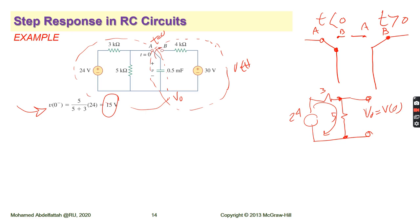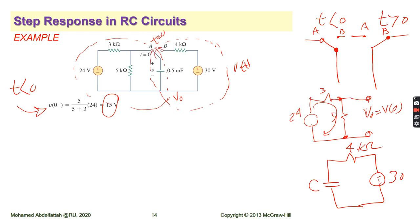Once you find the initial condition, move to the next switch position. After time zero, when the switch moves to the right circuit, we have a resistor, supply, and capacitor. The circuit is simple. The initial voltage is V0 = 15 volts. When the switch moves to this direction, current will flow and the voltage — initially 15 volts — will change due to the supply.